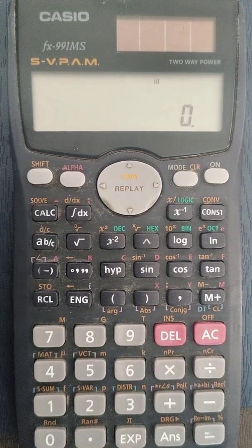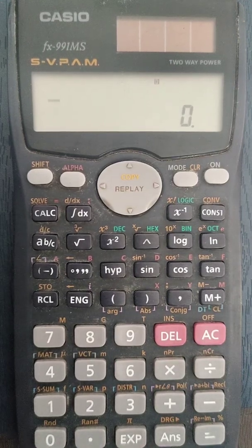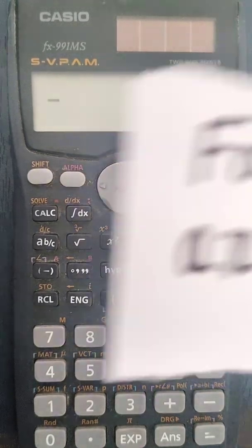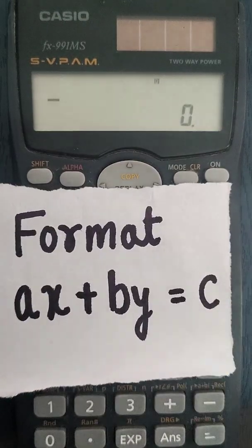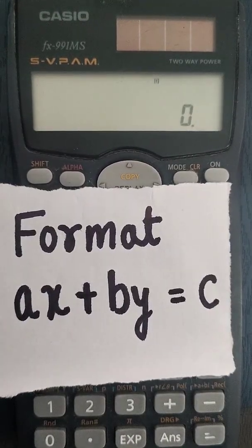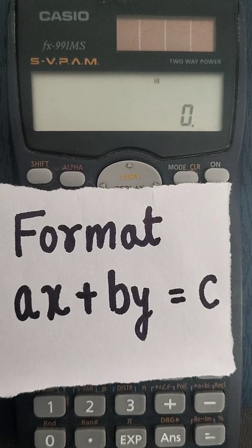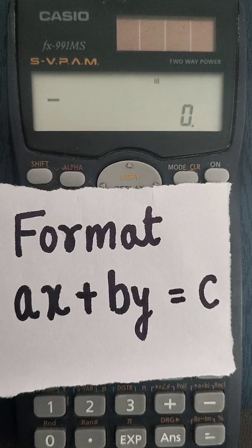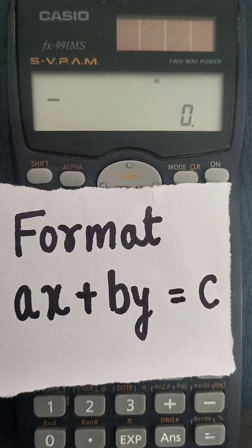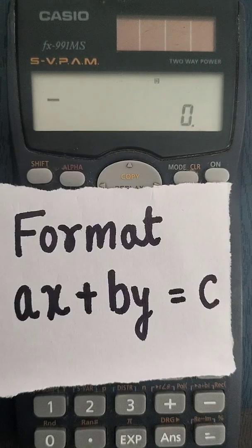Before we start, the format of entering the equation values are in the form of ax plus by is equal to c if it is a two unknown variable with two equations. If it is three unknown variables with three equations, then it will be ax plus by plus cz equal to d.